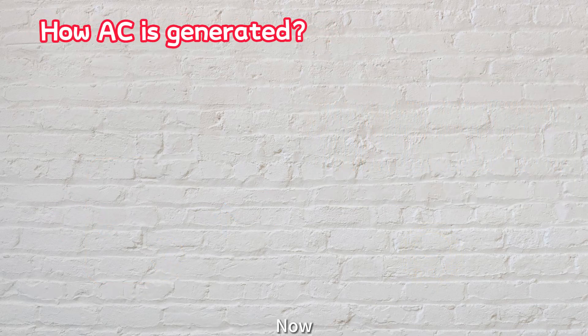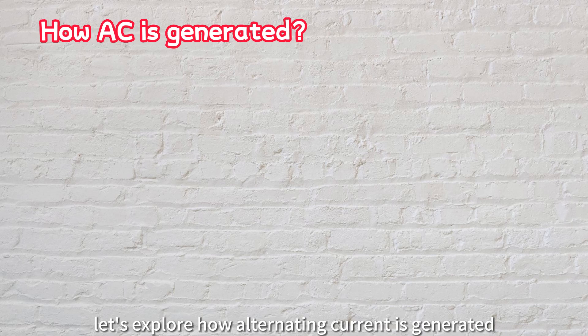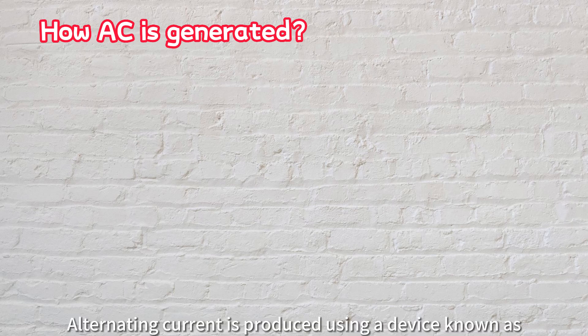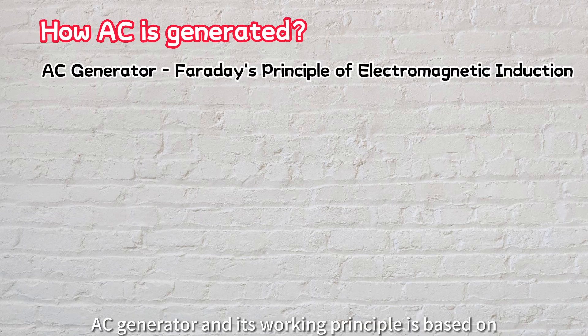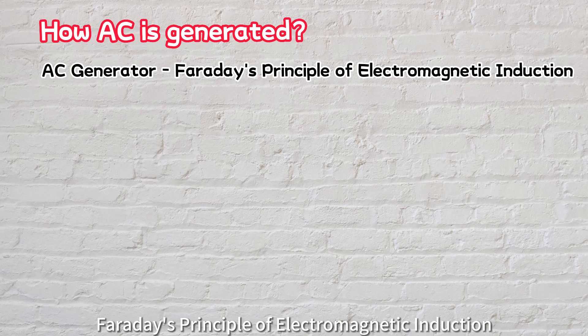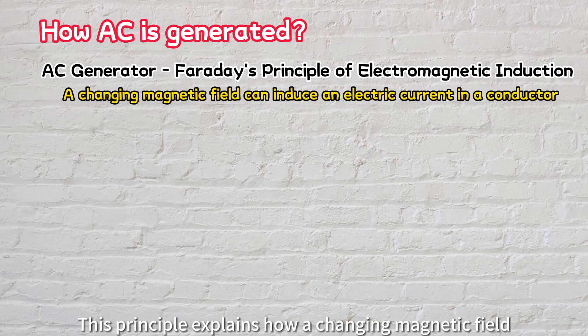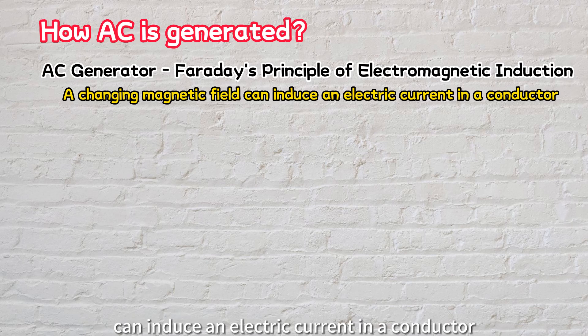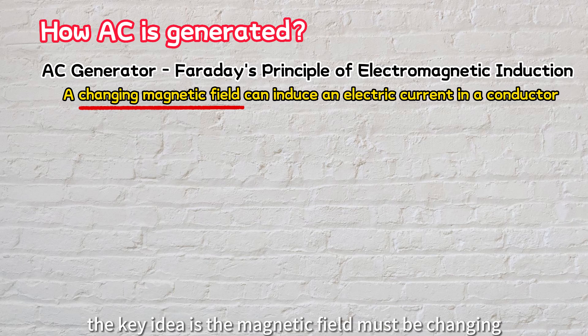Now let's explore how alternating current is generated. Alternating current is produced using a device known as an AC generator, and its working principle is based on Faraday's principle of electromagnetic induction. This principle explains how a changing magnetic field can induce an electric current in a conductor. The key idea is that the magnetic field must be changing.